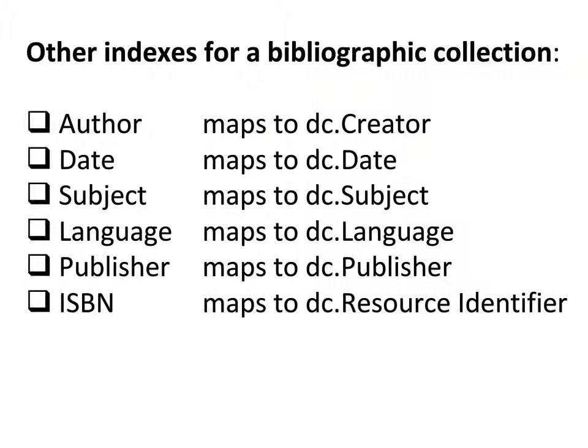For a bibliographic type collection, other indexes that might be useful are author, date of publication, subject, language, and publisher. People want to know: is this a good quality publisher or Joe's Garage? ISBN would be similar to the title one — a list of all records in ISBN order. Fortunately, our MARC records will put the data into these fields automatically, as the MARC record format has been mapped to Dublin Core, so these elements get populated when we exploded the database.